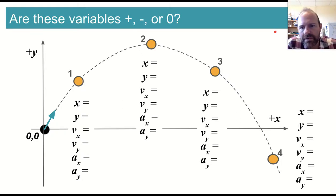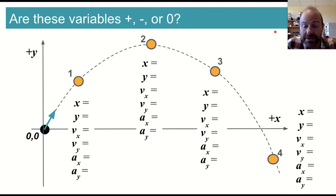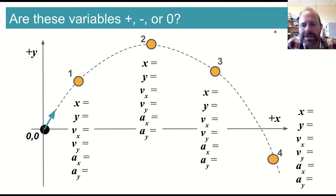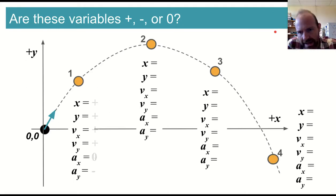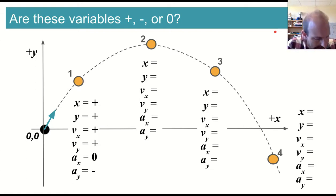We can go through them one at a time. At position 1, we have an x position that is to the right, so positive. A y position that is up, so positive. A vertical velocity and a horizontal velocity both in the positive direction. The x component of acceleration is always zero because it's constant velocity, and the y component is always down, or negative.